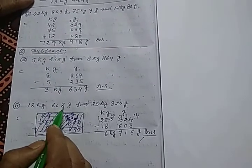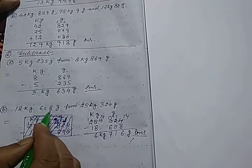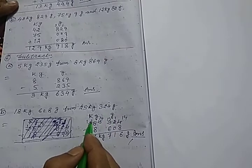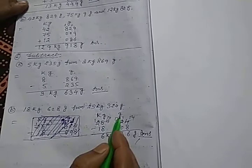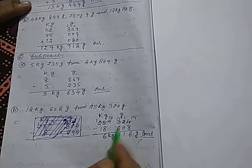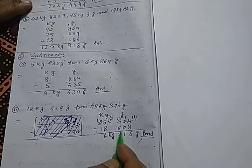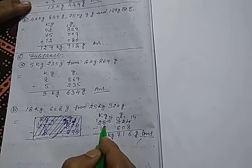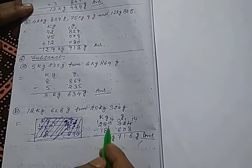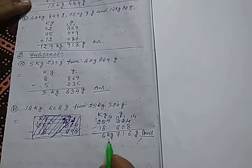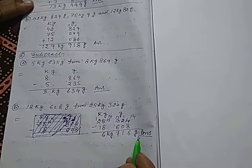In V, 18 kg 608 gram is to be subtracted from 25 kg 324 gram. We arrange two columns — kg and gram. First is 25 kg 324 gram, second is 18 kg 608 gram. After borrowing and subtracting different digits, we get 6 kg 760 gram.